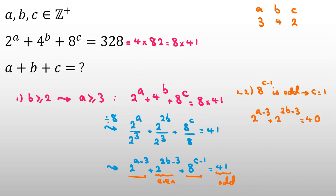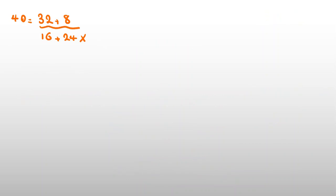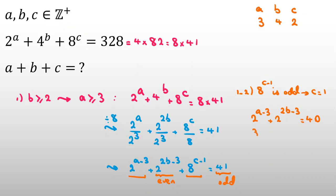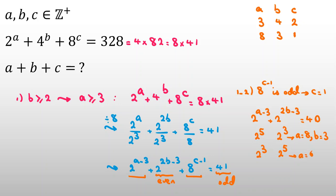Again, 40 as a sum of powers of 2 is 32 plus 8, that is 2 to the 5 plus 2 cubed. We can assign them in two ways. First: A minus 3 equals 5, so A equals 8; and 2B minus 3 equals 3, so 2B equals 6 and B equals 3. Solution: A=8, B=3, C=1. Second: A minus 3 equals 3, so A equals 6; and 2B minus 3 equals 5, so 2B equals 8 and B equals 4. Solution: A=6, B=4, C=1.